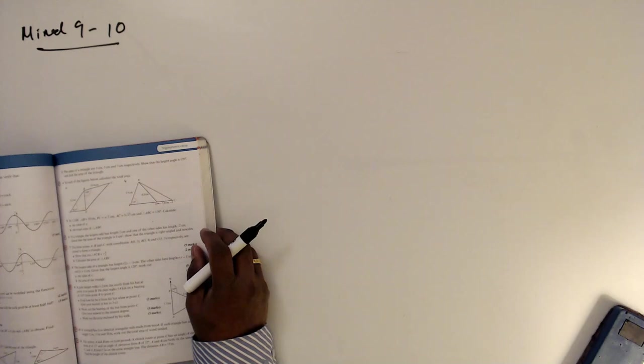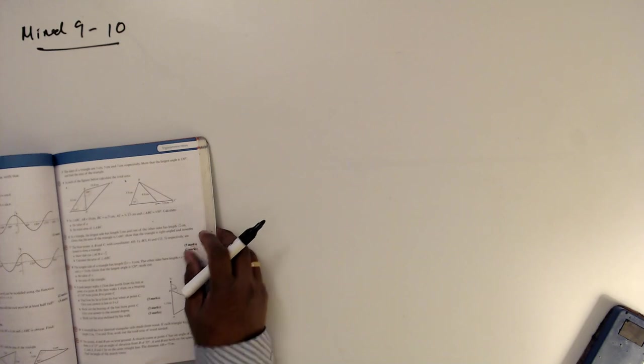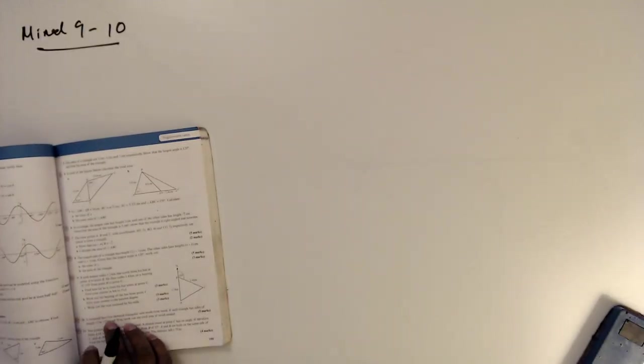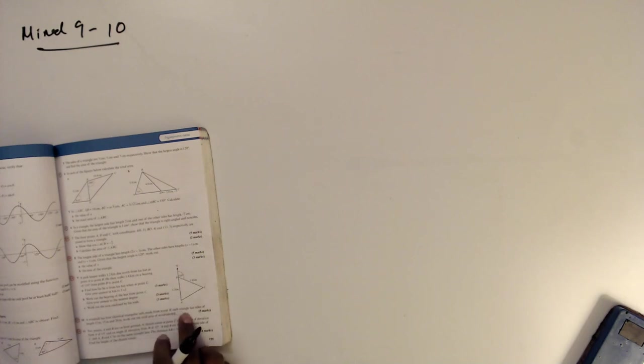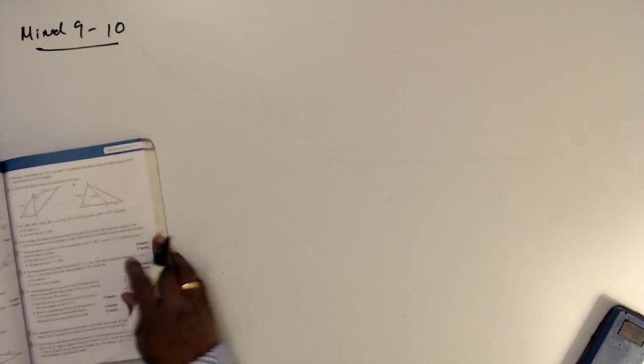Mix exercise question number 10. Exercise 9, question number 10: a windmill has four identical triangular sails made from wood. If each triangle has sides of lengths 12, 15, and 20, work out the total area.